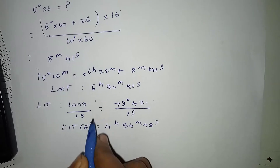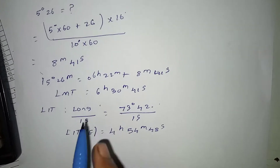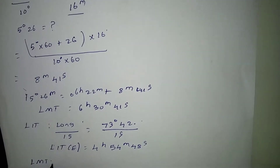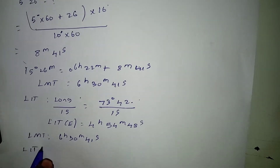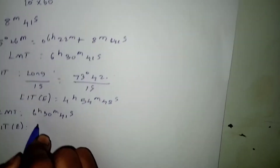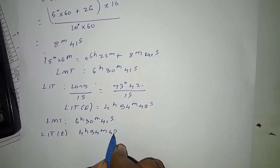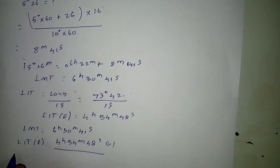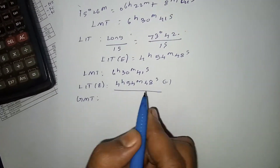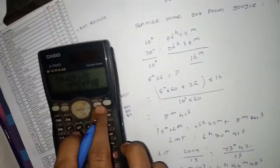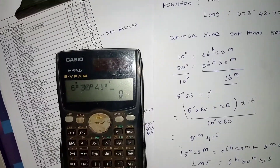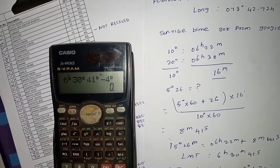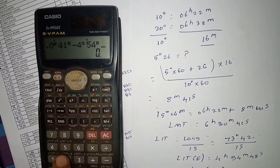48 seconds. Here we have LAT East, West. LMT: 6 hours 30 minutes 41 seconds. LAT East, so minus 4 hours 54 minutes 48 seconds. Here we have GMT sunrise time: minus 12 — minus 4 hours 54 minutes 48 seconds.